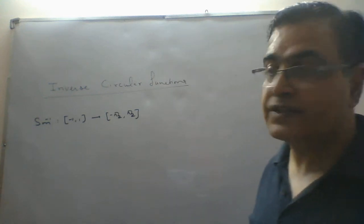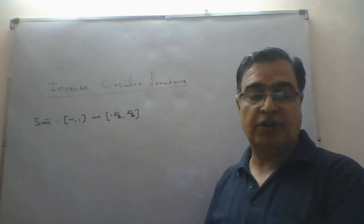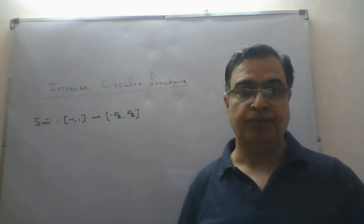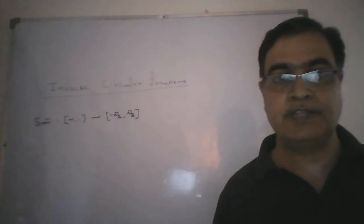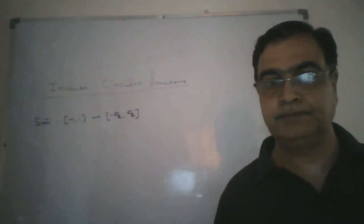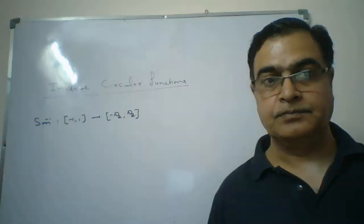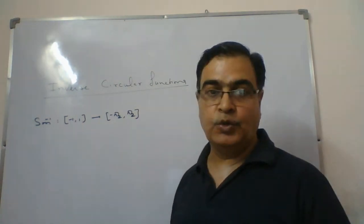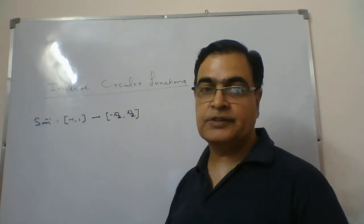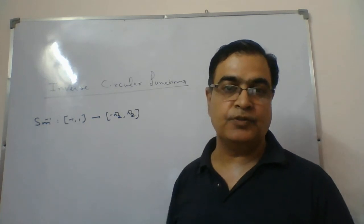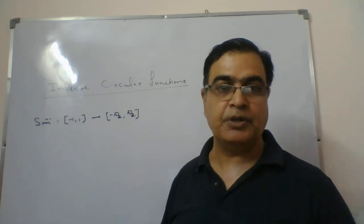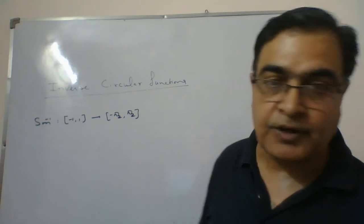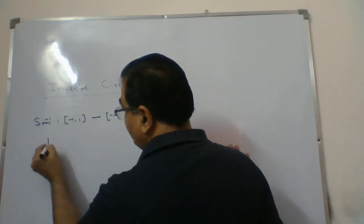Good morning. Today we are starting with the inverse circular function questions. I told you about the graph last time — what the graph was, what the domain of this function is, what the co-domain or range is, since this is a one-one onto function and inverse is possible here. Now, the first type of question they will ask is: what is the principal value?